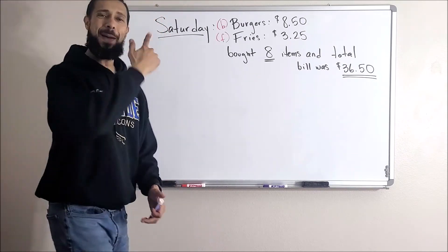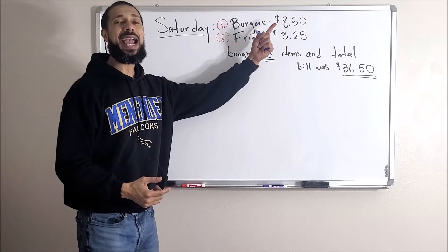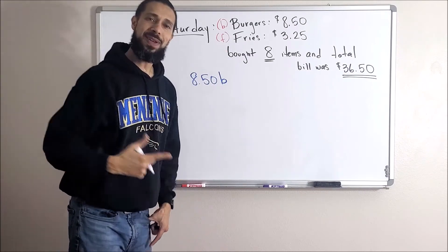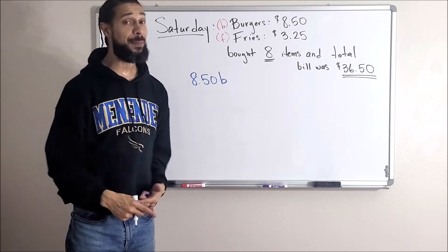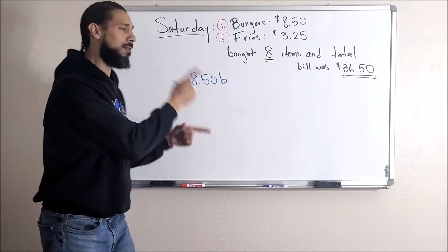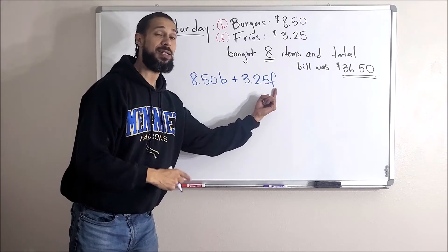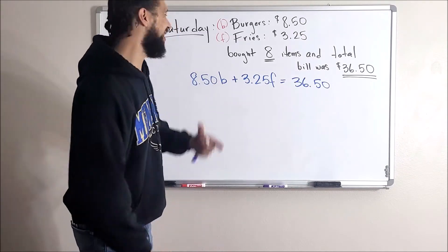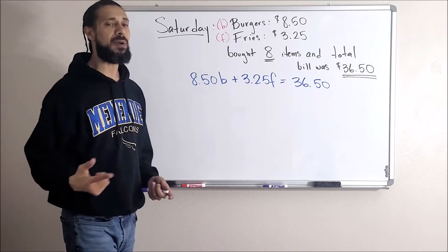First off, let's get some variables out there: b for burgers, f for fries, exactly right. So if burgers are $8.50 a piece and I buy b number of burgers, it'll be 8.50 times b. Now I know you're not used to seeing decimals in here, but it can happen. Let's add in my fries now. I'm paying 8.50 per burger, 3.25 per fries, and my total tab was $36.50. There's one equation, this is about the money, exactly right.